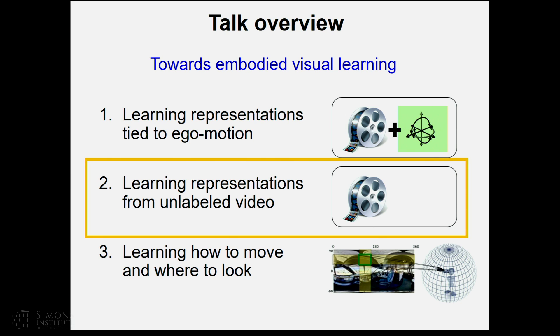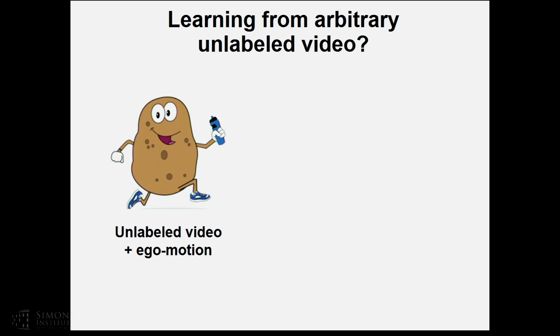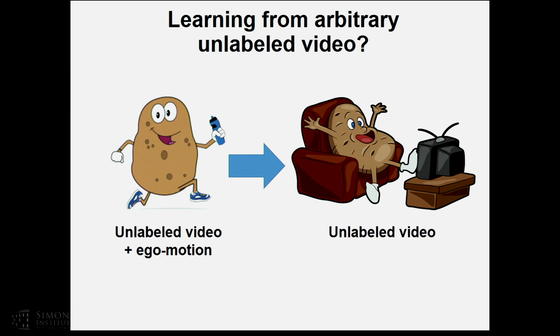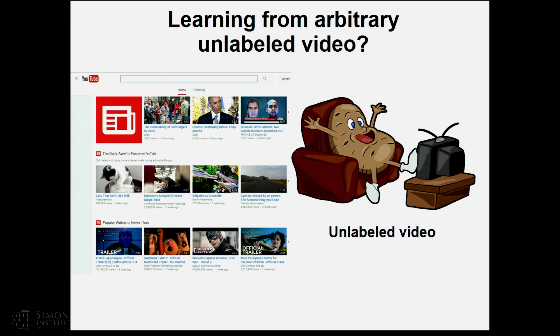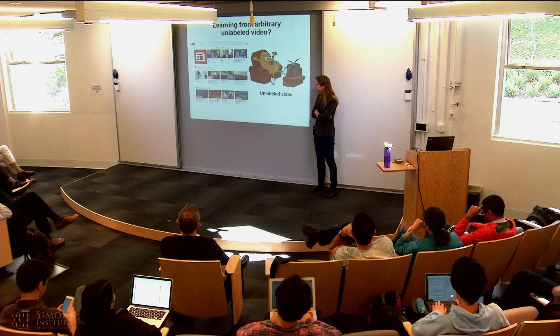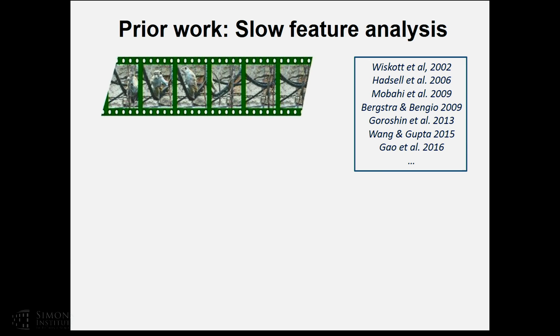I've talked about ego-motion-tied representations. Let me briefly address how we can relax the need for ego-motion-sensory data. What if I don't have egocentric video with motion sensing, but just passively-watched video? This is attractive because of the amount of unlabeled video that exists without external sensor readings. We look at slow feature analysis as a starting point — a form of invariant feature learning where, learning from video, the semantic signal and high-level information only changes slowly over time, whereas pixels change with high frequency.